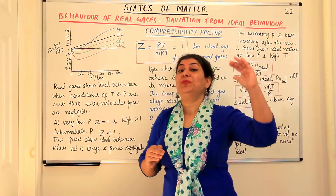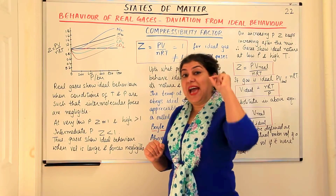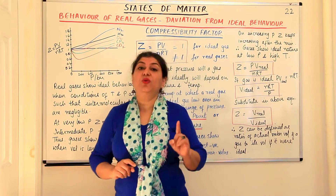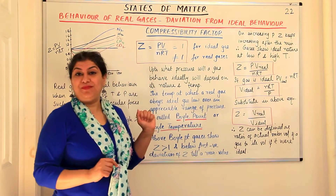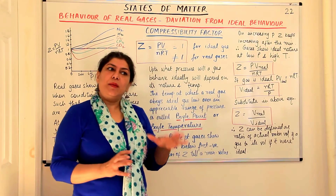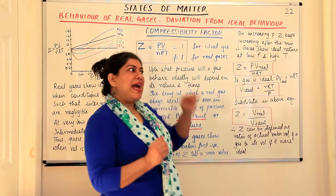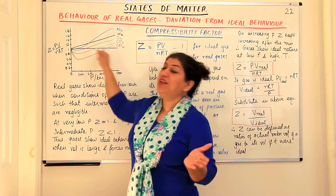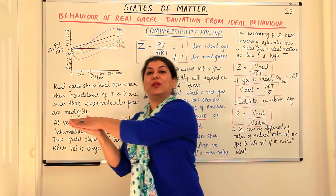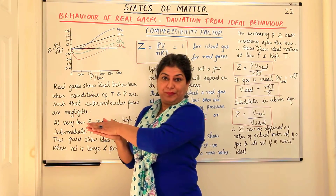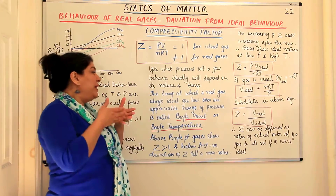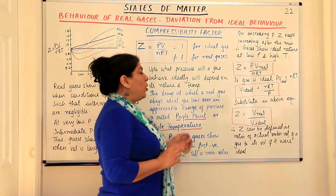This temperature at which a particular gas shows ideal gas behavior for an appreciable range of pressure is known as the Boyle point or Boyle temperature. Just like boiling points and melting points exist for liquids, for gases this is a fixed temperature at which the gas shows ideal behavior for an appreciable range of pressure — the compressibility factor coincides with the ideal gas value of Z = 1 as pressure increases. The temperature at which a real gas obeys the ideal gas law over an appreciable range of pressure is called the Boyle point or Boyle temperature.